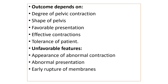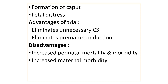If all these factors are favorable, you can expect a normal delivery. The unfavorable features include appearance of abnormal uterine contractions during labor, abnormal presentation, early rupture of membranes, formation of caput, and signs of fetal distress — these all come under unfavorable conditions.